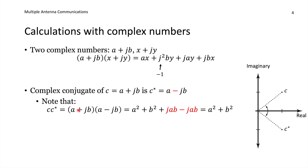Let's compute c times c conjugate. We have a plus jb times a minus jb. Expanding: a times a gives a squared; jb times jb with the minus gives plus b squared, since j times j is also minus one; and the cross terms jba and a times minus jb cancel out. So we get a squared plus b squared, which is the magnitude of c squared. This is one way of computing the magnitude: multiply c with its conjugate and take the square root.